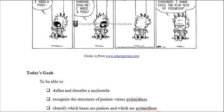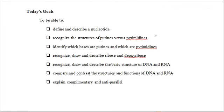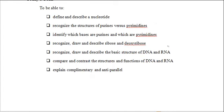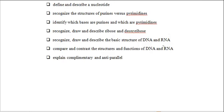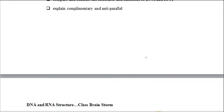By the end of today's lesson, you should be able to define and describe a nucleotide, recognize the structures of purines versus pyrimidines, identify which bases are purines and which are pyrimidines, recognize, draw, and describe ribose and deoxyribose, recognize, draw, and describe the basic structure of DNA and RNA, be able to compare their structures and functions, and finally explain complementary and anti-parallel.